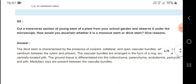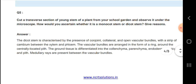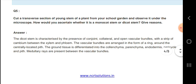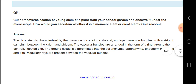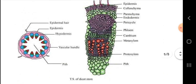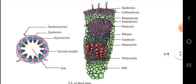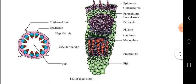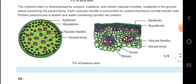Next, the transverse section of a young dicot stem shows vascular bundles. Dicot stem is characterized by the presence of conjoint, collateral, and open vascular bundles.